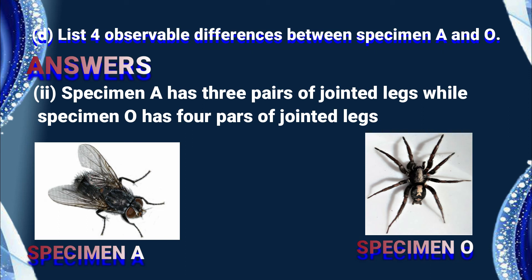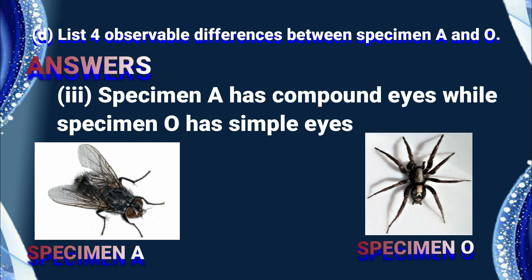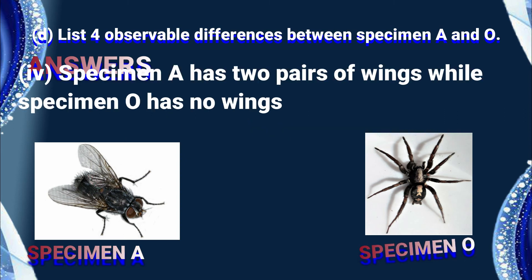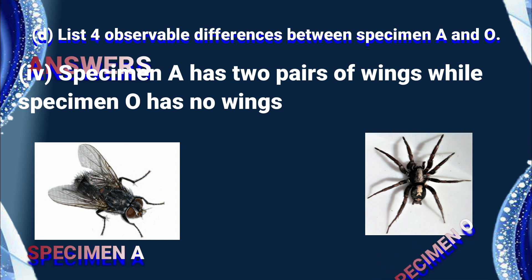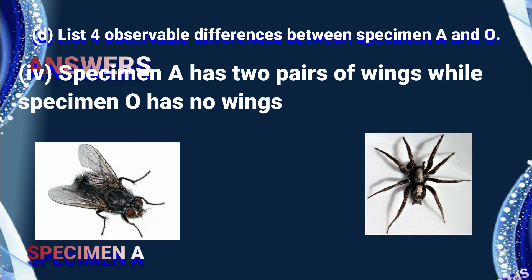Difference three: specimen A has compound eyes while specimen O has simple eyes. Difference four: specimen A has two pairs of wings while specimen O has no wings. There are many differences, but according to the question we have taken those four differences between specimen A and specimen O.